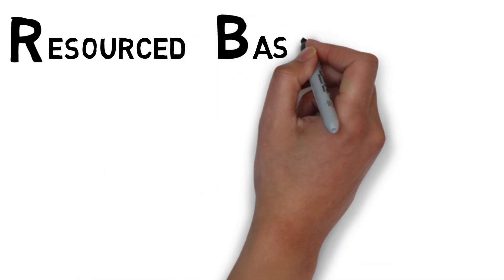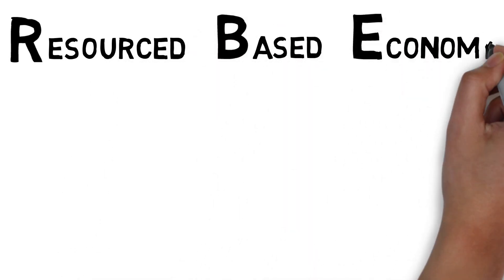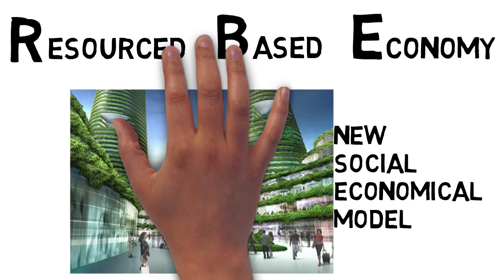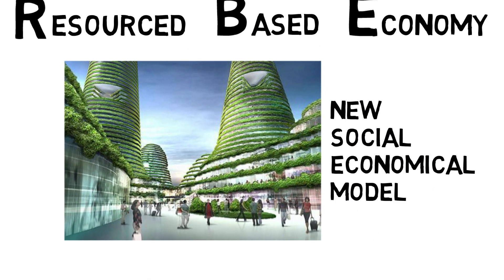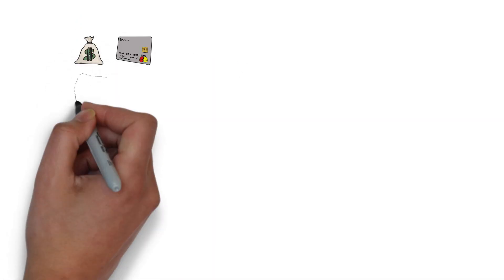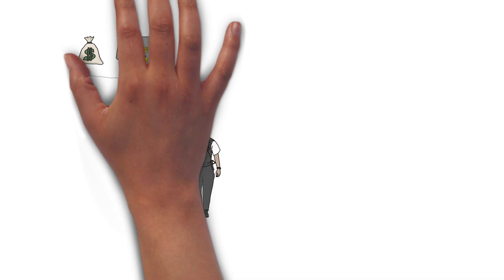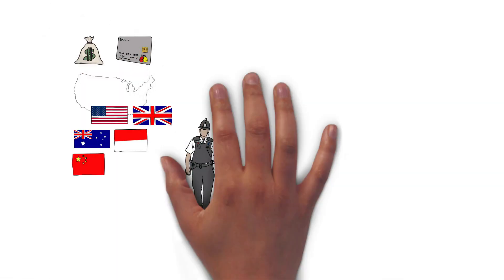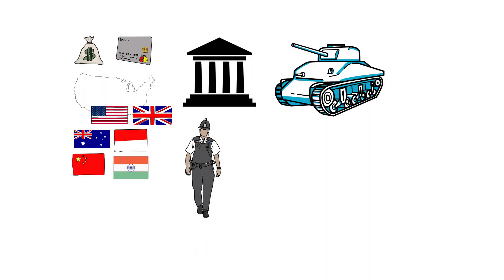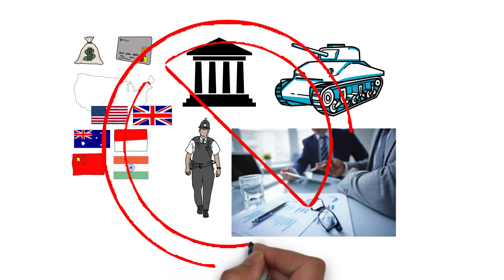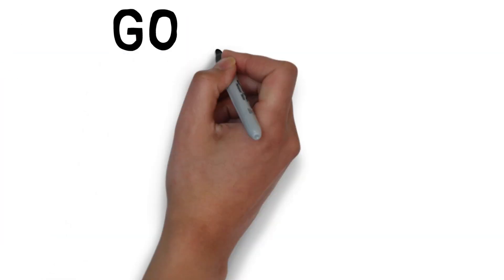A resource-based economy, or short an RBE, is a new socio-economical model that is very different from the monetary system we know today. In an RBE, there is no money, country, government, police, military, companies, or ownership of any kind.